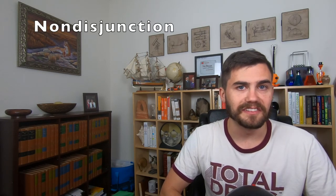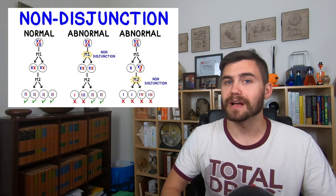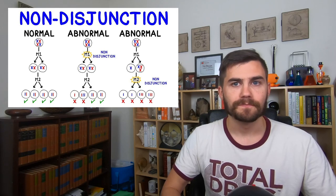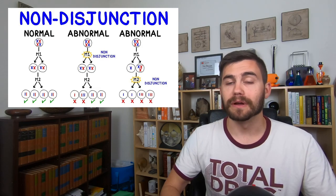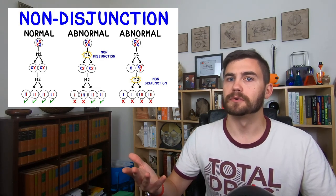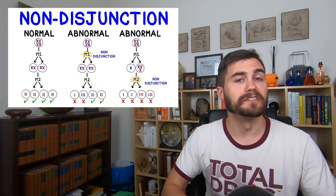The final type of chromosomal mutation is also the result of meiosis and it's called non-disjunction. Non-disjunction is where the pairs of chromosomes do not separate the way they should. So instead of four cells each with 23 chromosomes, you end up with, for example, two cells with 24 chromosomes and two cells with 22 chromosomes. When a cell has more chromosomes than it should, the condition is called polyploidy.